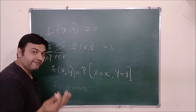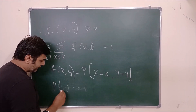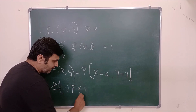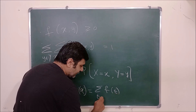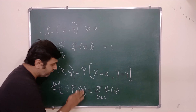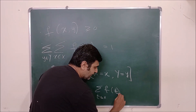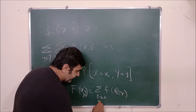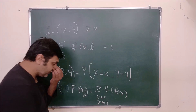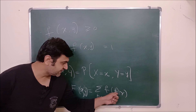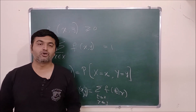What is joint CDF? For one variable, capital F(x) = summation of f(t) where t ≤ x. For two variables, capital F(x, y) = double summation of f(t, r) where t ≤ x and r ≤ y. You sum over all t ≤ x and all r ≤ y, and that gives you the joint CDF.